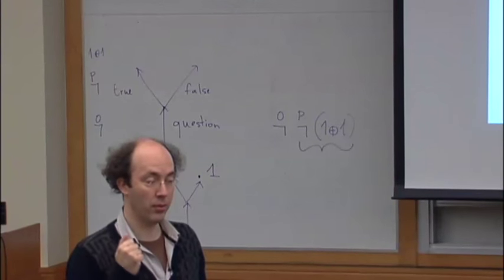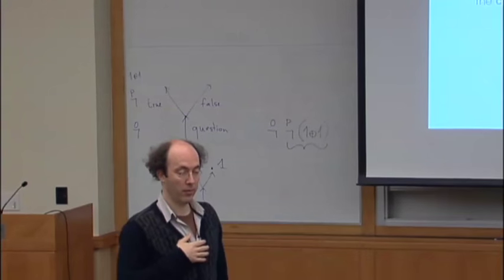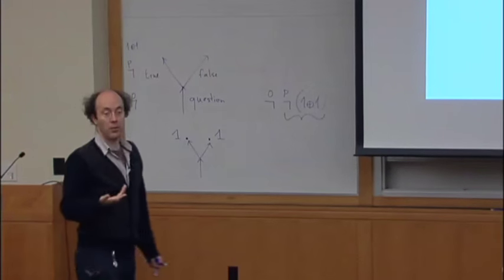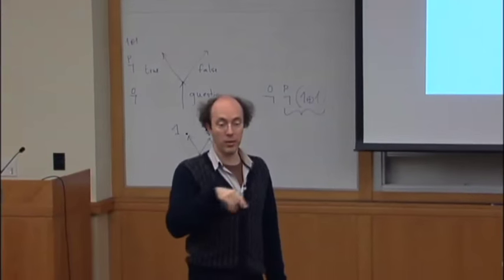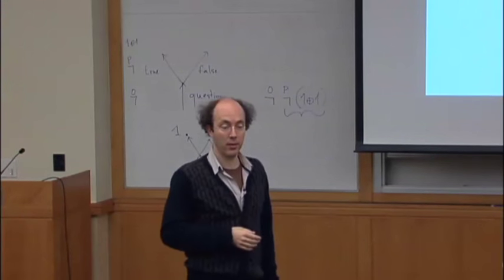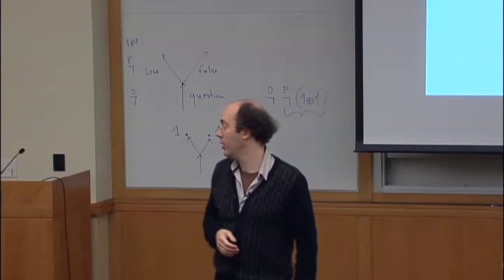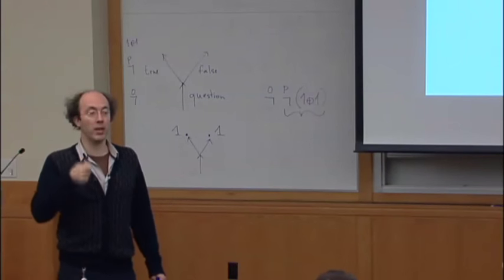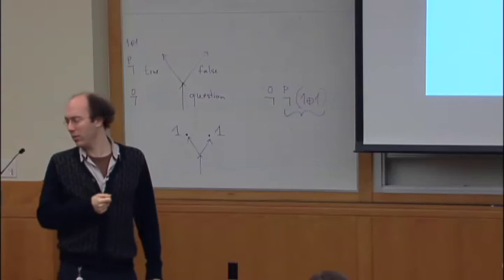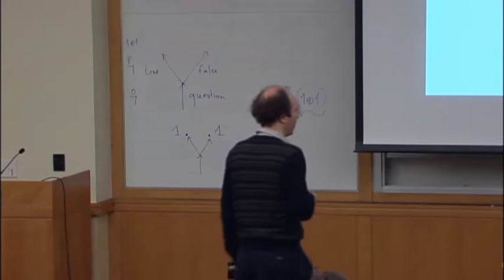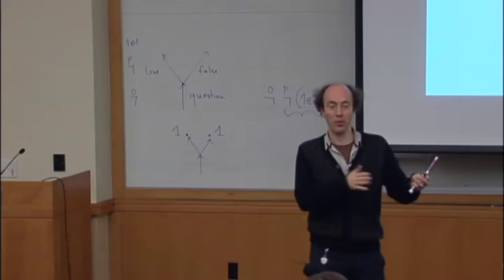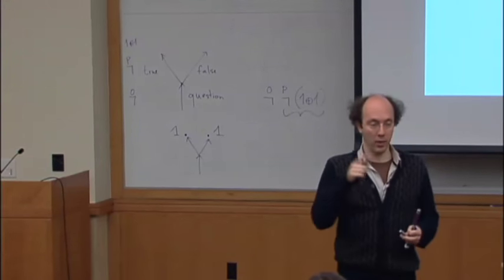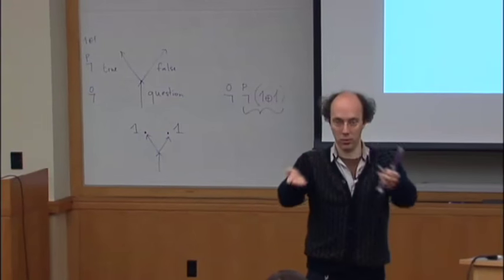1 plus 1 would be this forest, then negation of 1 plus 1 would be this, and double negation of 1 plus 1 would be this. Really, the idea is that negation is a turn. If we have sums, you should allow forests in the models. In fact, all the formulas we consider in typical logic have a negation in front, so then it's a tree. 1 plus 1 is the game where a player chooses one component; negation means it's your turn so you choose; and double negation means you ask me and then you choose.